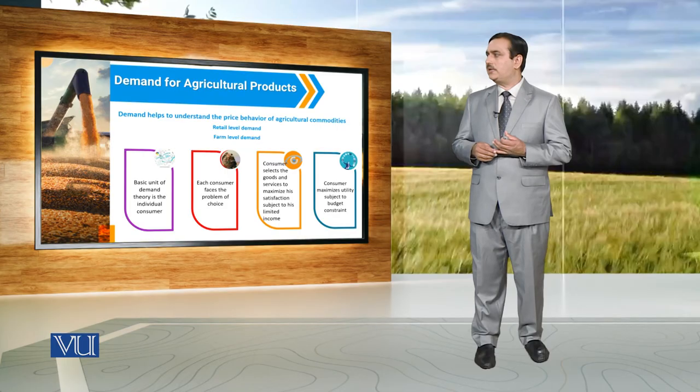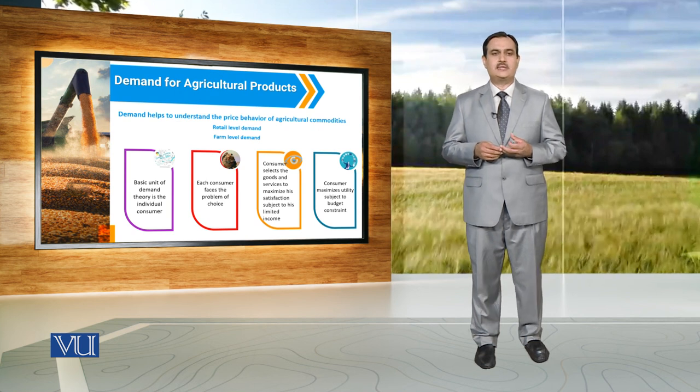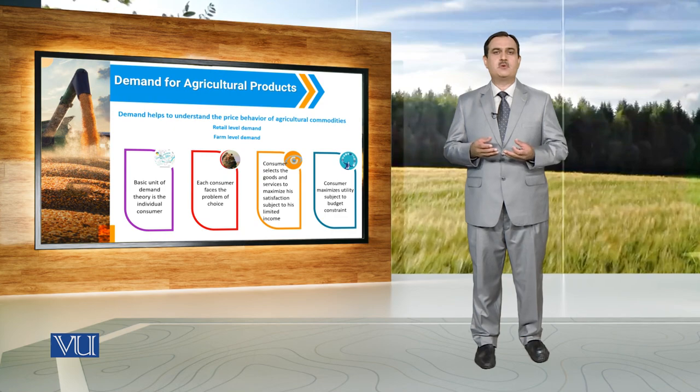In the determination of demand at both the retail and farm level, the basic unit of demand theory is the individual consumer. It is the consumer that creates demand for a particular commodity. Each consumer faces a problem of choice, as there are a number of commodities available for consumption. Based on affordability and willingness, the consumer selects a particular commodity. The major constraint in the consumer's choice of goods and services is income, as every consumer has a limited income.